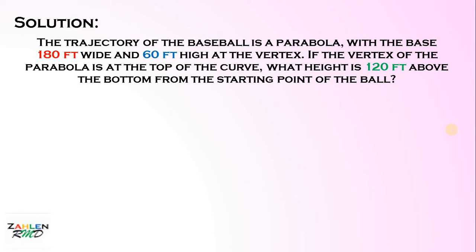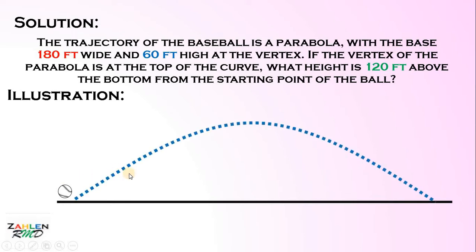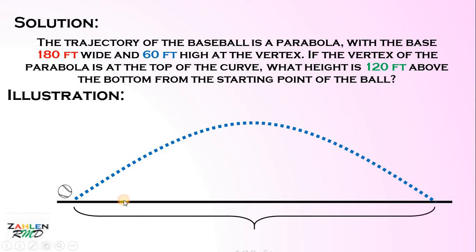The first thing to do is to make an illustration of this problem. The trajectory of the baseball is a parabola, with the base 180 feet wide and 60 feet high at the vertex. So let's have the ground, and the trajectory of the ball is a parabola. The base is 180 feet, and the height of this ball is 60 feet.